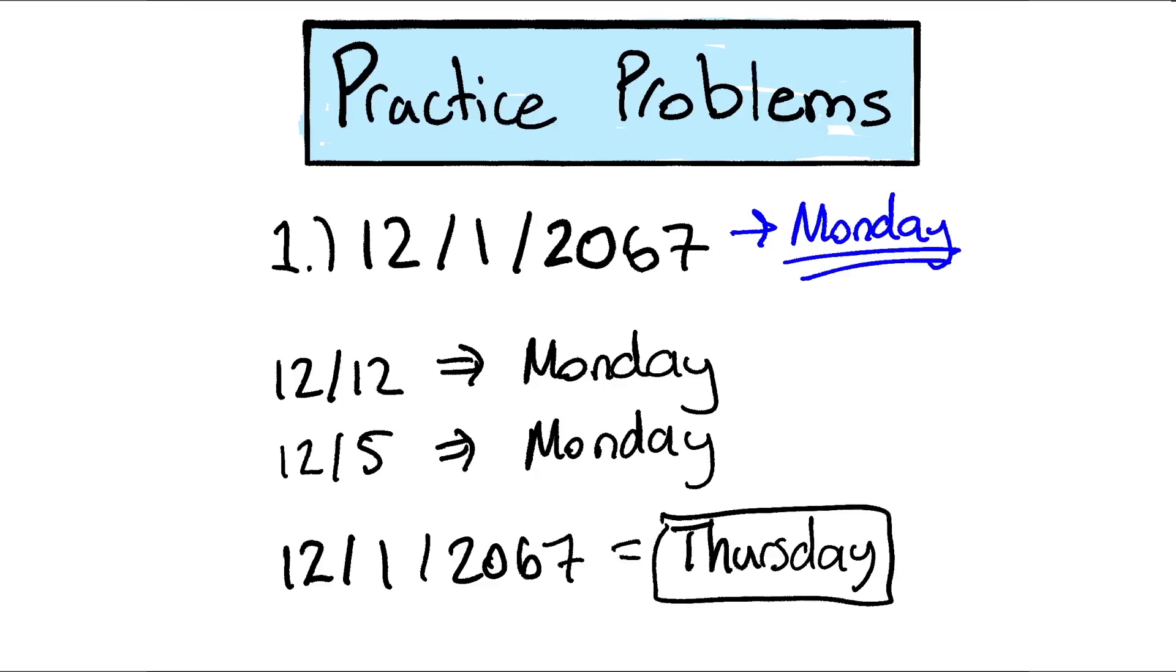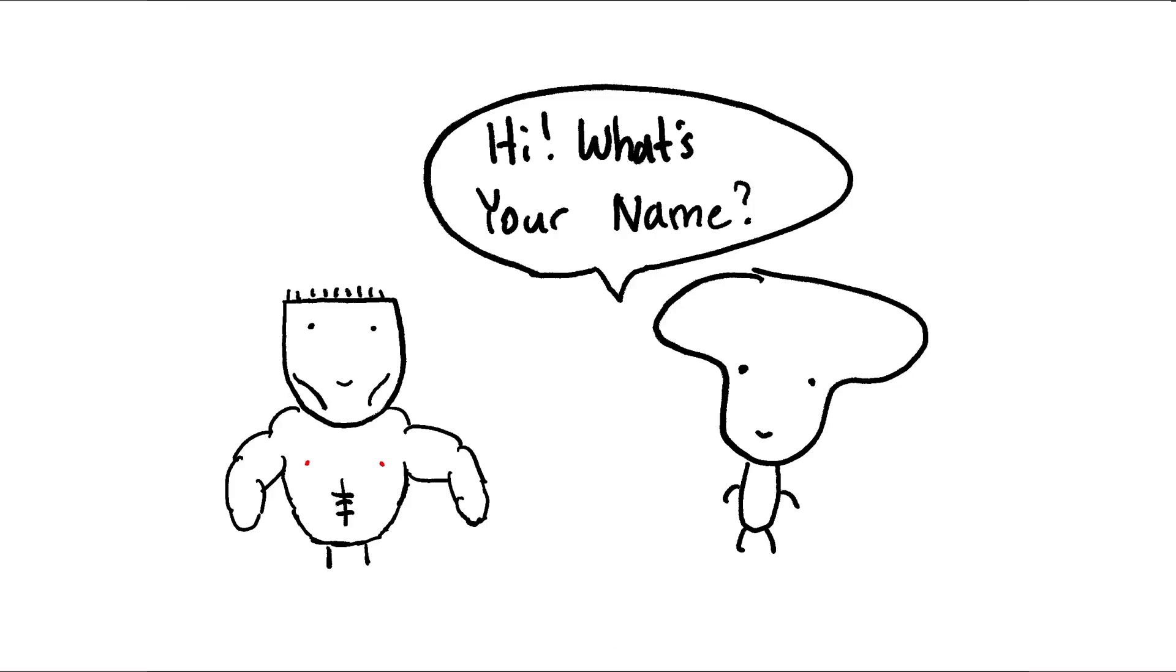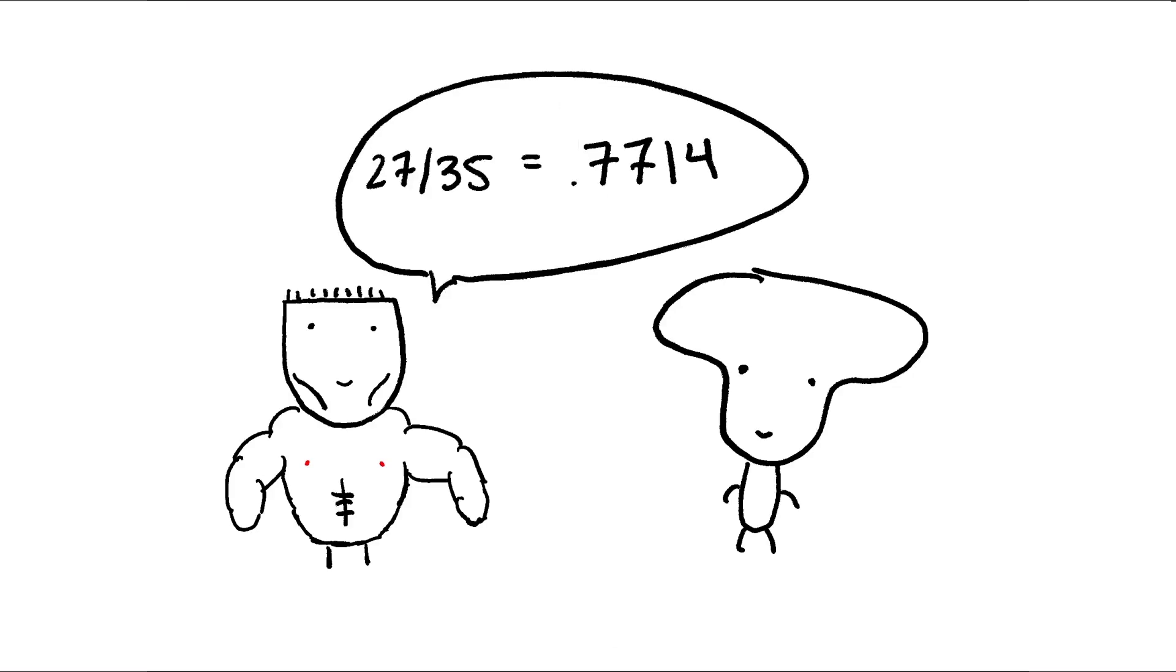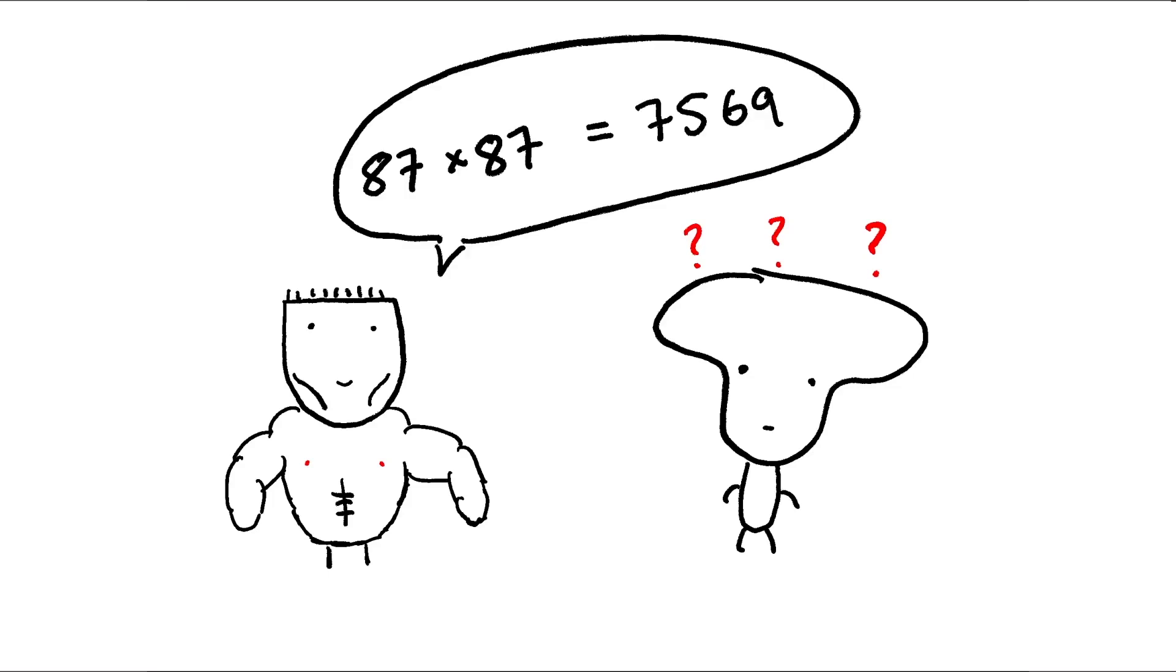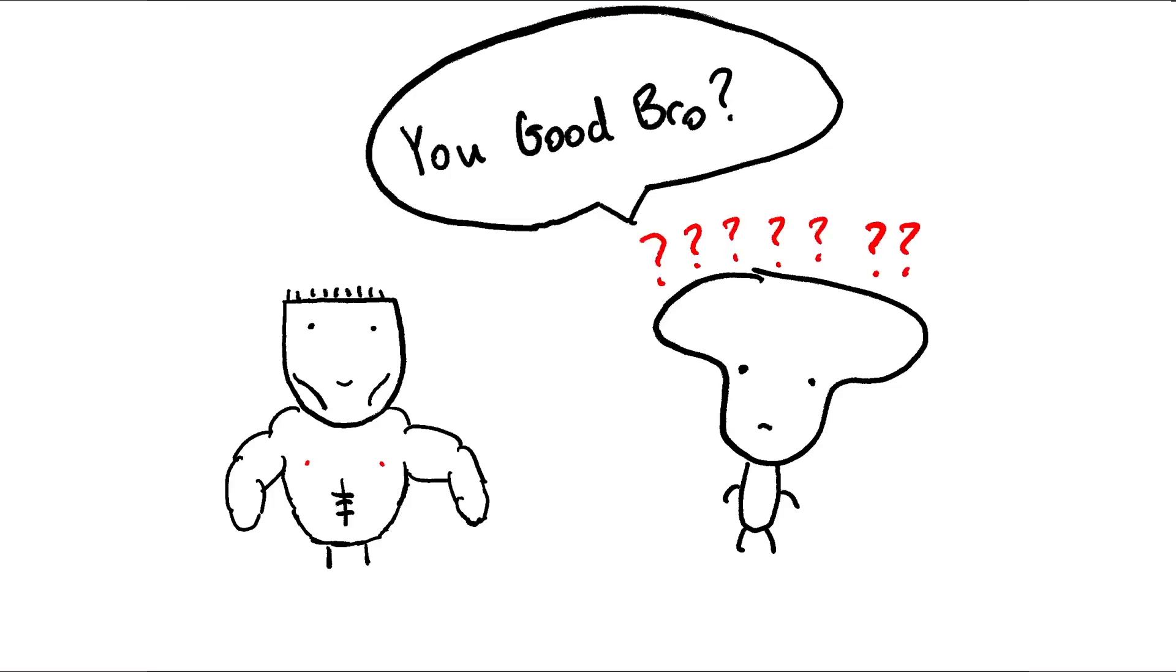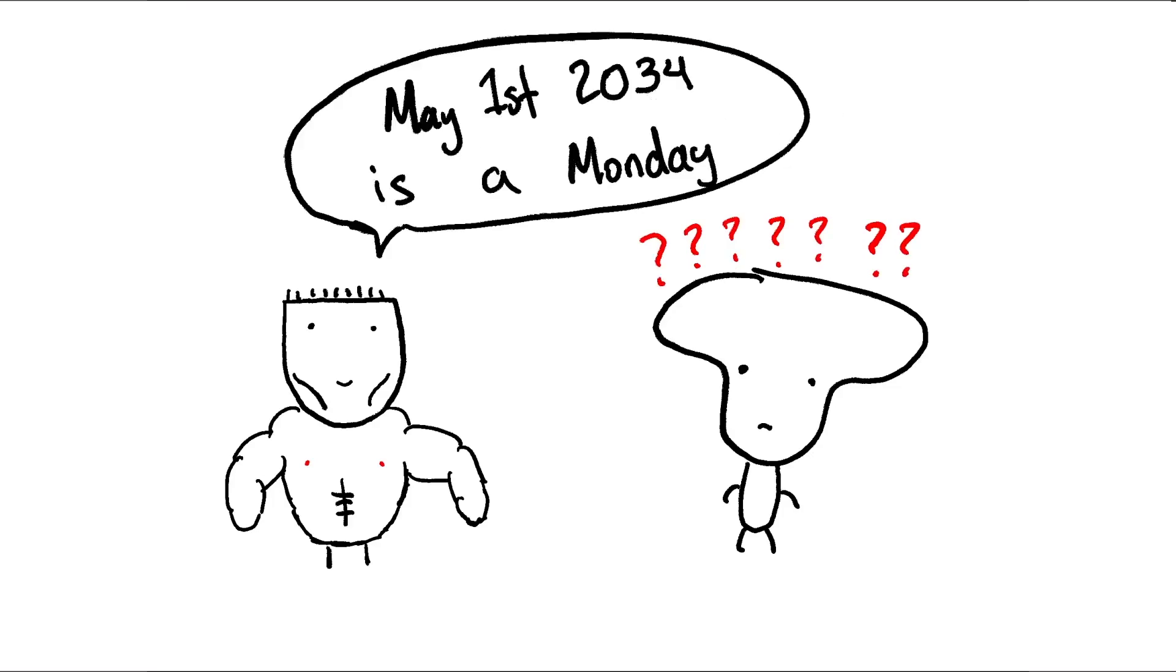And if you get really good at this, you can start doing this in your head and maybe impress the one motherfucker that actually gives a shit about you. So if you've implemented all our techniques, your life should look a little something like this. Hi, what's your name? 27 divided by 35 is 0.7714. Okay. 87 times 87 is 7,569. You, you good, bro? May 1st, 2034 is a Monday. Anyway, take care.